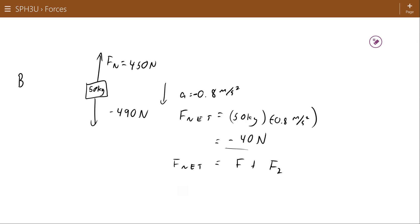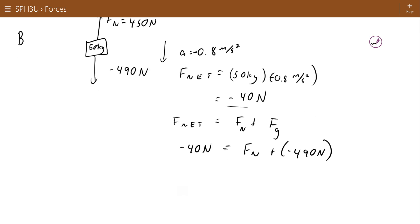We can also use the equation. That's the normal force and the force of gravity. So that negative 40 newton net force is going to be equal to the normal force plus the negative 490. When the negative 490 comes over to the other side, it becomes positive 490. And so that works up to 450 newtons for the normal force.